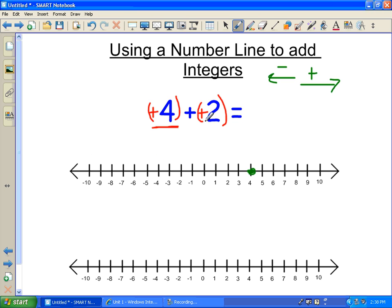So let's add 2 more. So starting at plus 4, we go 1, 2 more jumps. So here is the answer, and the answer is positive 6, like that.